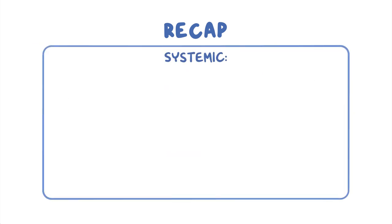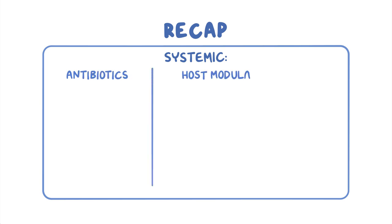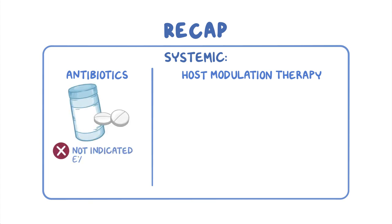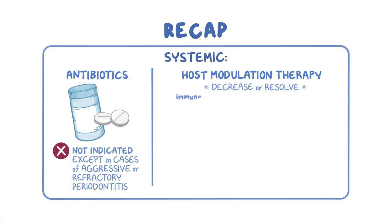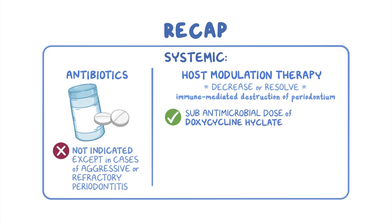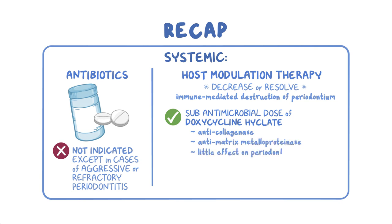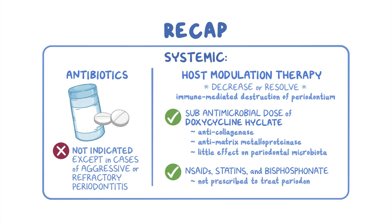Finally, systemic delivery covers the systemic use of antibiotics and host modulation therapy. Remember that systemic antibiotic therapy is generally not indicated except in certain cases, like if there's aggressive or refractory periodontitis. Host modulation therapy aims to decrease or resolve the immune-mediated destruction of the periodontium. Sub-antimicrobial dose of doxycycline hyclate has been approved to treat periodontitis mainly due to its anti-collagenase and anti-matrix metalloproteinase activity, and it has little effect on the periodontal microbiota. Medications like NSAIDs, statins, and bisphosphonates can provide periodontal benefits, but they are not prescribed to treat periodontitis.